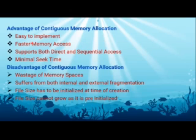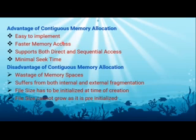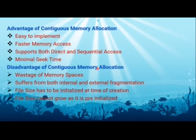The advantages of continuous allocation are: it is easy to implement, it provides faster memory access, it supports both direct and sequential access, and it has minimalistic seek time. The disadvantages are: it wastes memory space, it suffers from both internal and external fragmentation, the file has to be initialized at the time of creation only, and files cannot grow dynamically. Internal and external fragmentation were explained in the previous video.